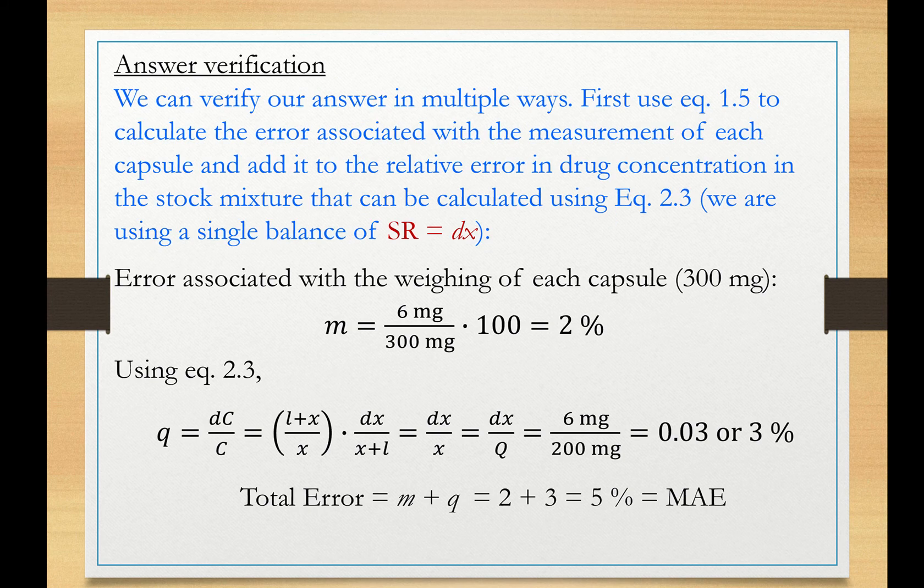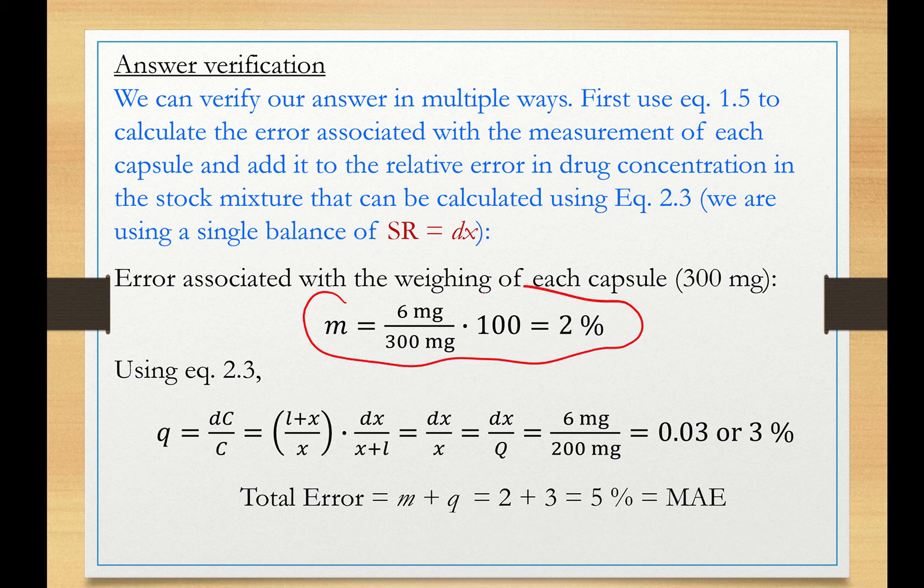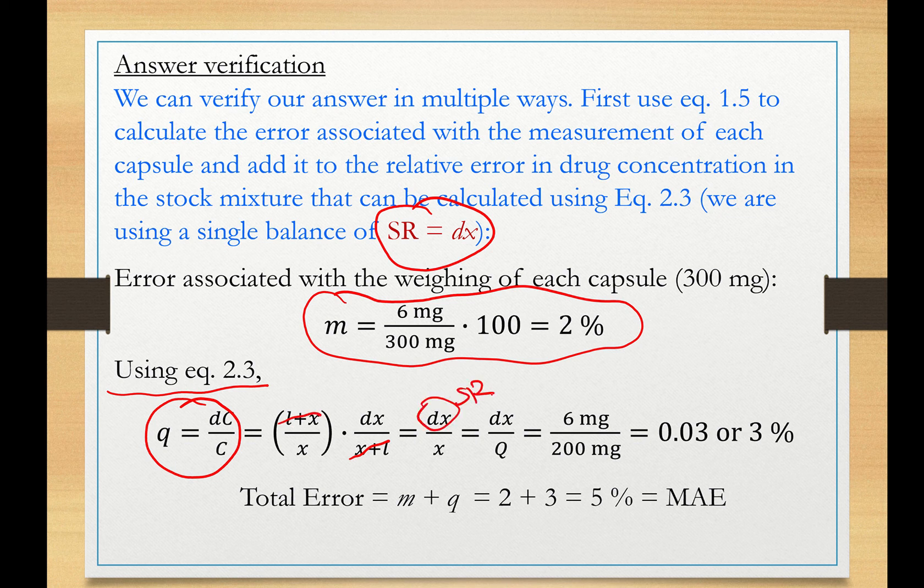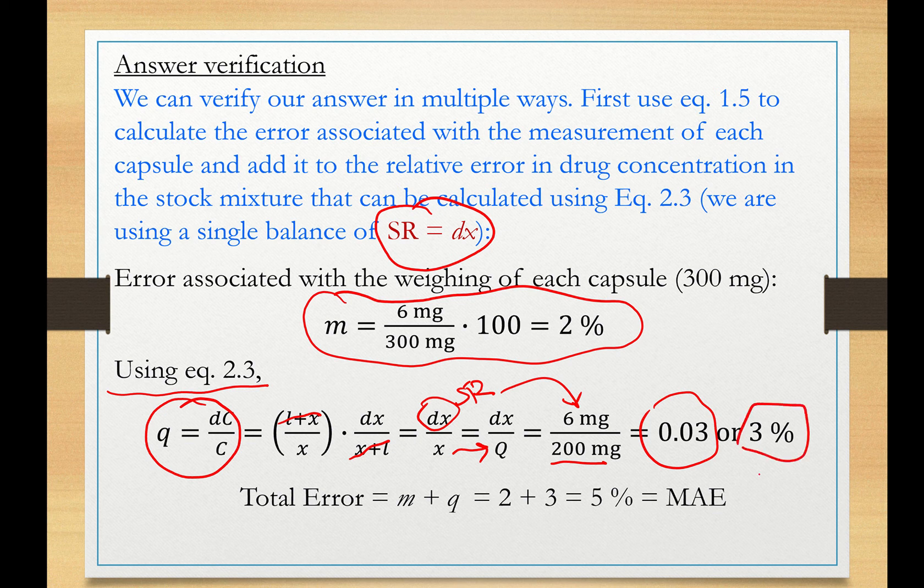We can verify our answer a number of ways. Here basically, we have already done that. The error associated with each capsule is 2%. And now I need to calculate the error associated with the drug measurement, the drug measurement Q. The SR is equal to the DX here. So I'm using equation 2.3 which we have extensively discussed in lesson 3. This is my relative error. And you can see that this cancels out because the same SR. And DX now is the SR of the balance, which is 6 milligrams. And X is Q, which is 200 milligrams. So totally, I have the relative error is 0.03 associated with the drug measurement, or 3%. And therefore, my total error is 2 plus 3, 5%. This is amazing.